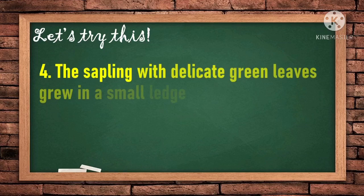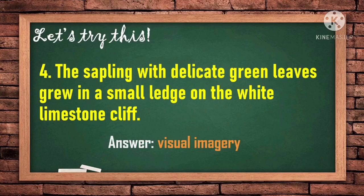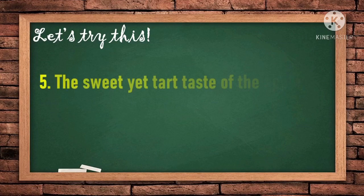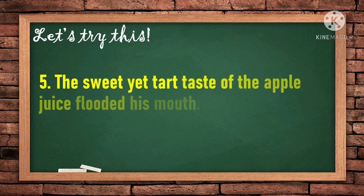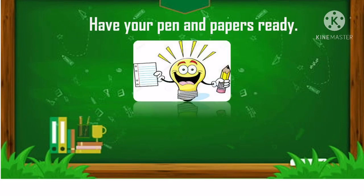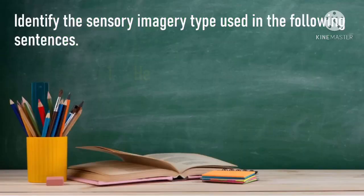Number four: 'The sapling with delicate green leaves grew on a small ledge on the white limestone cliff.' Number five: 'The sweet yet tart taste of the apple juice flooded his mouth.' Use your creativity to identify the imagery types!